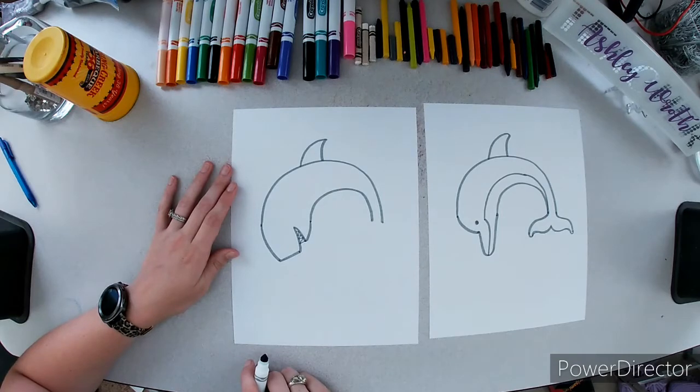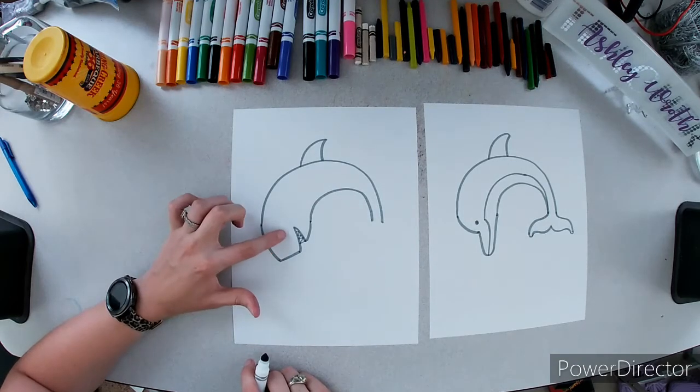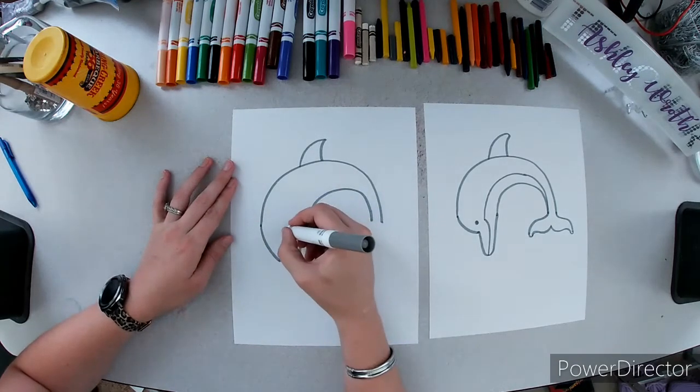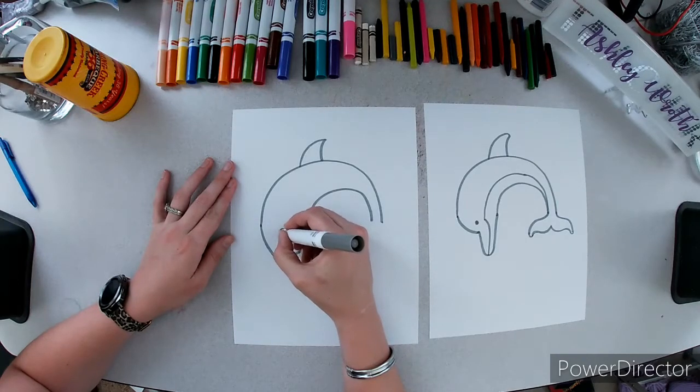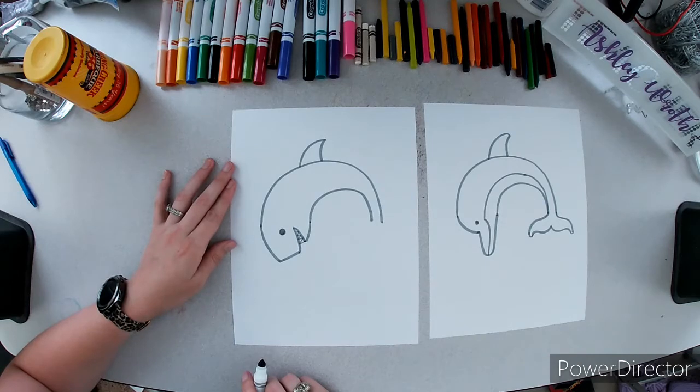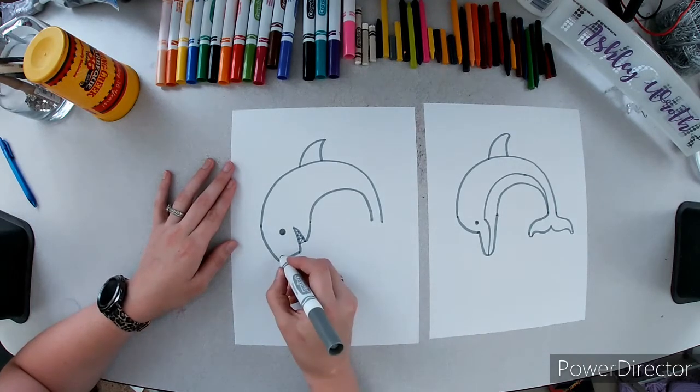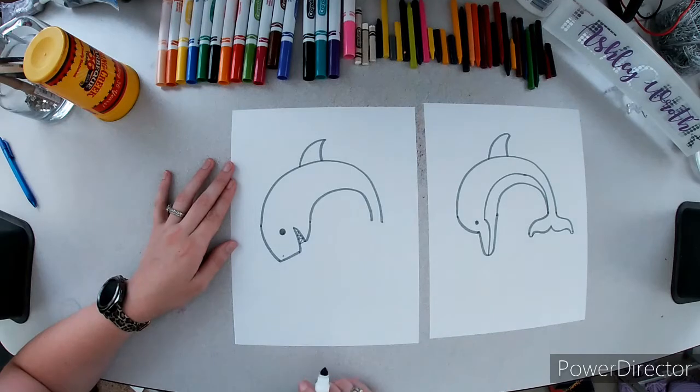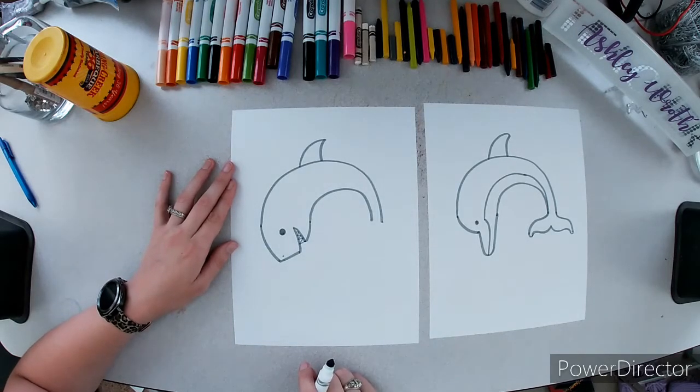And a shark's eye is pretty far back. It's not very close to his nose. If you want to, you can even add a little dot for his nostril, for how he smells things in the water.